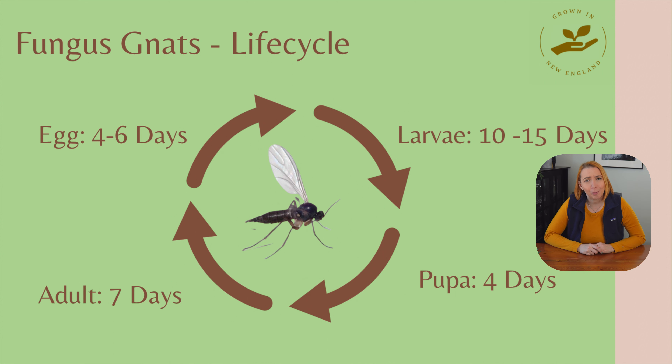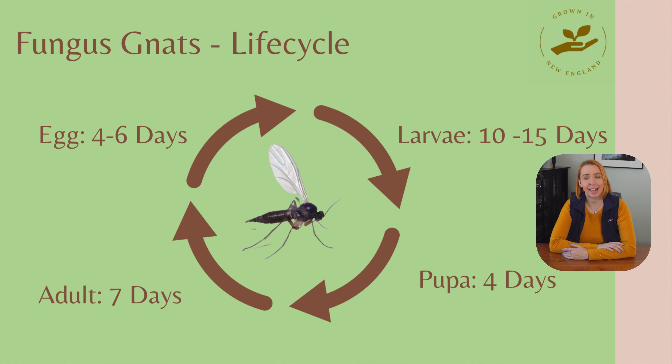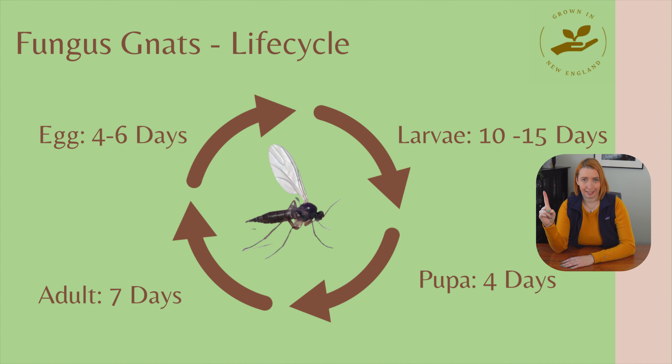Once they are done feeding they turn into a pupa, and that stage is about four days, then they emerge as adults. One adult typically lays one hundred to two hundred eggs per fungus gnat. So just imagine you didn't catch five - next time you look you could have five hundred on your hands. Getting onto them early is key. That hockey stick effect if you don't get to them is something you should always keep in mind.